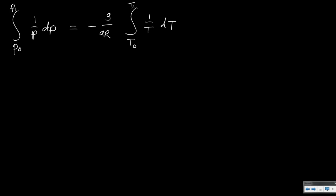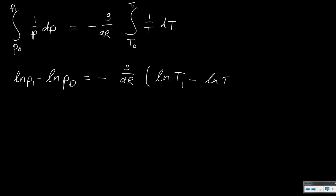The solution to the integral of 1 over p is the natural logarithm of p. So we can write this as the natural logarithm of p1 minus the natural logarithm of p0, equals minus G divided by AR times the natural logarithm of T1 over T0. We are basically done: if we have starting values p0 and T0, know A, G, and R, we can calculate T1 and then p1.